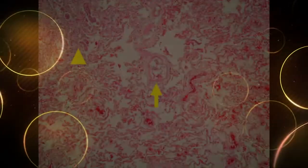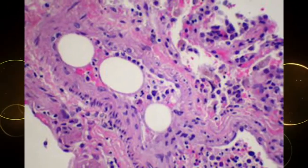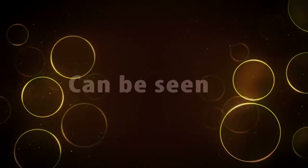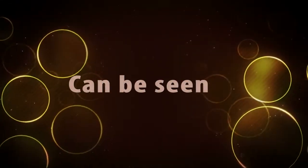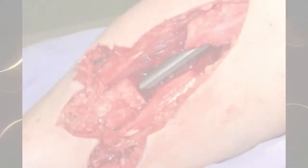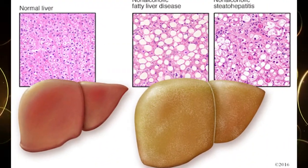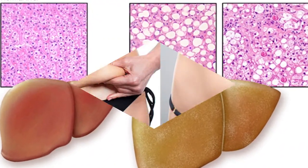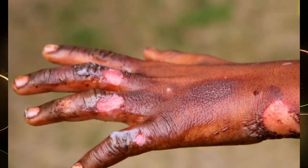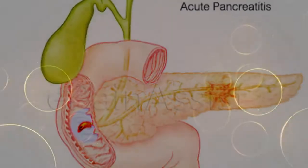Fat embolism occurs due to fat in the circulation, caused by trauma to adipose tissue. It can be seen in multiple fractures, surgical intervention of bones, damage to fatty liver, liposuction, burns, and acute pancreatitis.